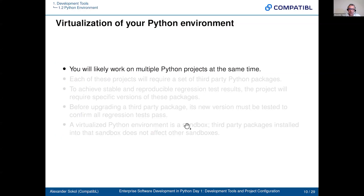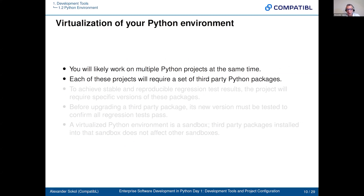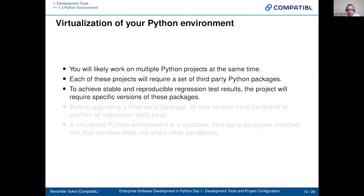Now, Python environment. So first of all, you likely will work on multiple Python projects at the same time, and each of these projects will require a set of third-party Python packages. To achieve stable and reproducible regression test results, the project will require specific versions of these packages. And before upgrading a third-party package, this new version must be tested to confirm all regression test paths.